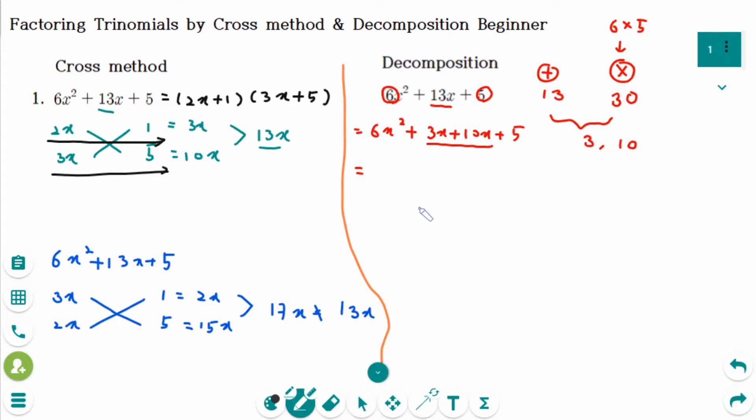And then you can factor out 3x in the first two terms. So factor like this. And then 5 in the last two terms. So 2x plus 1.